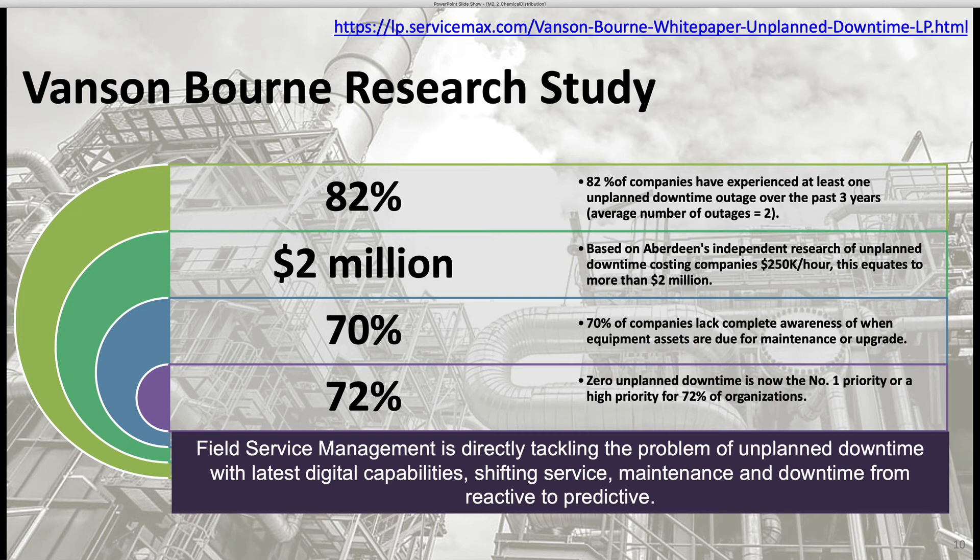This means that field service management is directly tackling the problem of unplanned downtime with the latest digital capabilities — shifting service, maintenance, and downtime from reactive to predictive. You can imagine people working in process control, machine learning, and artificial intelligence — things that can analyze data and help us predict when downtime comes. As you can see, it has a big impact on profit and costs associated with the plant.